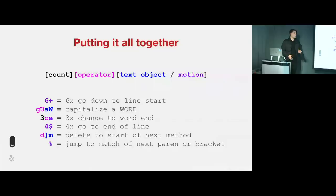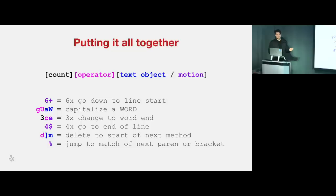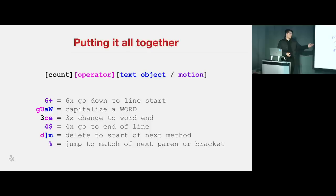That was a mouthful, so let me put it all together. The grammar is: operators acting upon text objects or motions, or just the motion itself. For example, 6+ goes down six times to the line start. G capital U A W capitalizes a word — go uppercase a word. 3CE means three times change to word end. Although it might look obscure at first, all of these can be remembered using these mnemonics.